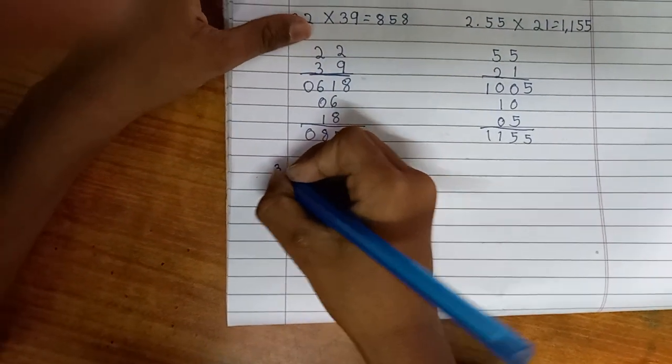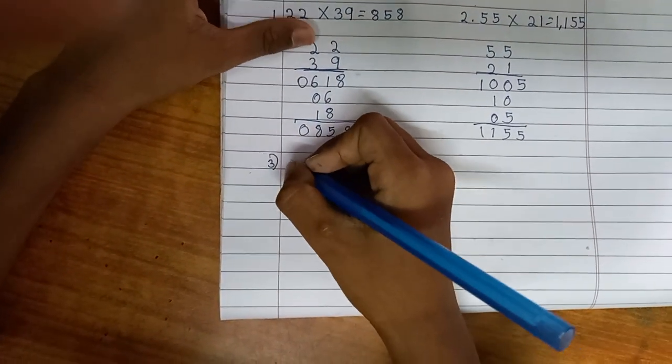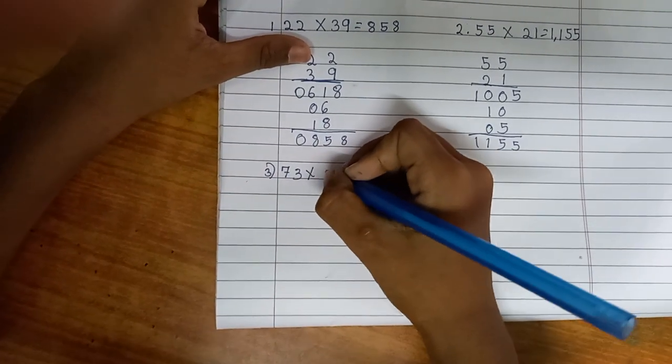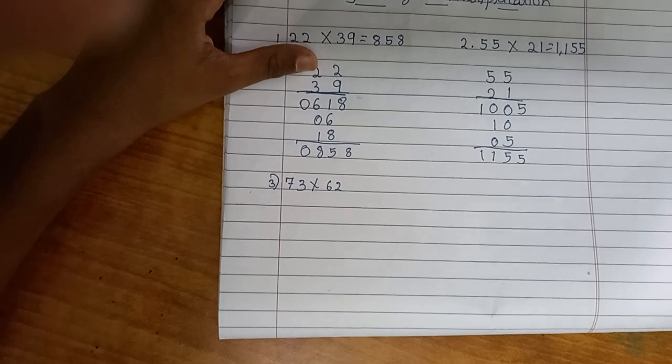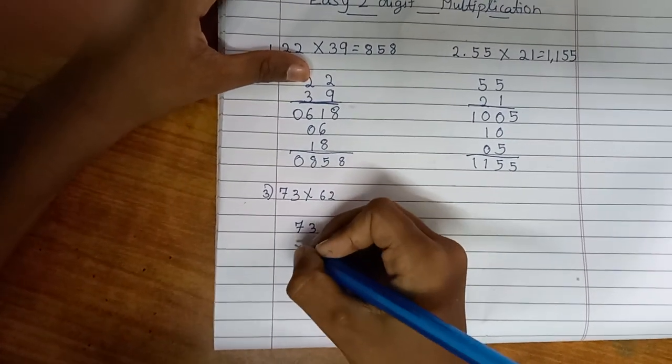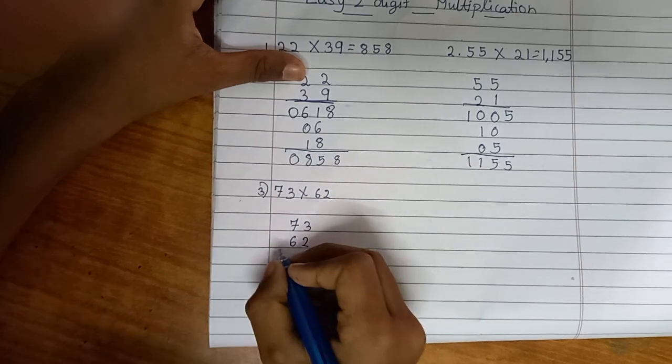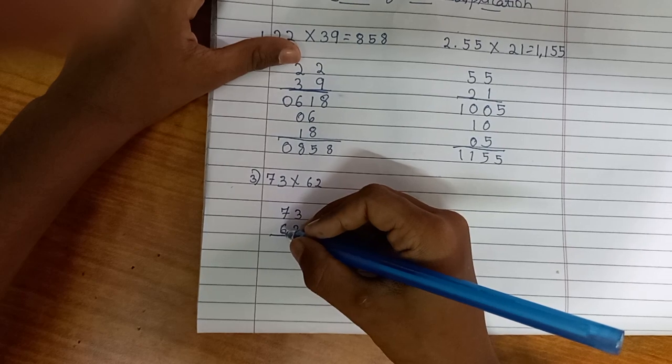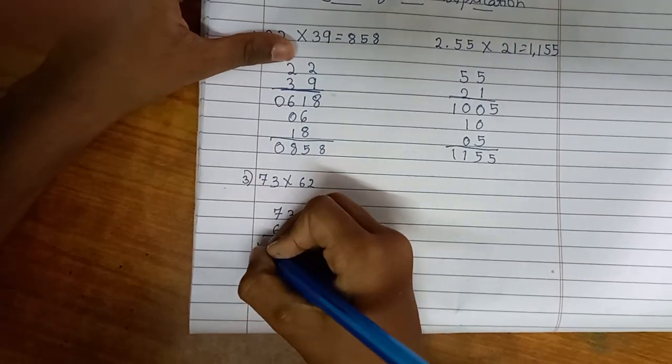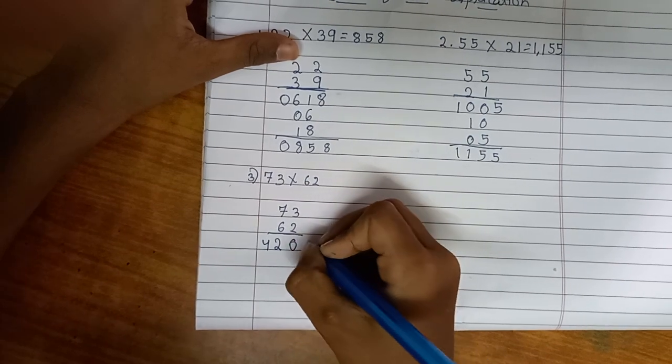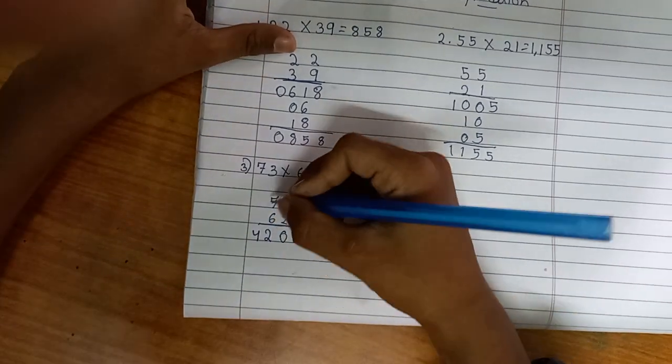We'll take another example: 73 multiplied by 62. So first 7 times 6 is 42, and 3 times 2 is 6. Now 7 times 2 is 14.